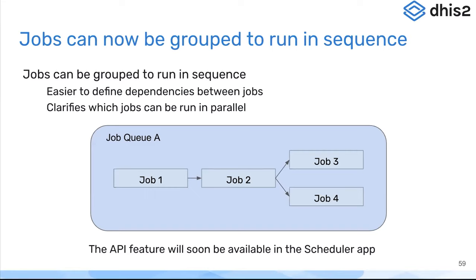You have to finish job one before job two begins. But then job three and job four have to run after job two, but they can be run in parallel. This allows you to clearly define the sequence of jobs that need to run after each other, and also which ones can run at the same time, so you don't need to wait for job three to finish before starting job four. This is a platform feature, and it will be available in the scheduler app as a user interface shortly, introduced via continuous delivery. It is available as a core functionality of the scheduler service and scheduler API in DHIS2 for version 40.